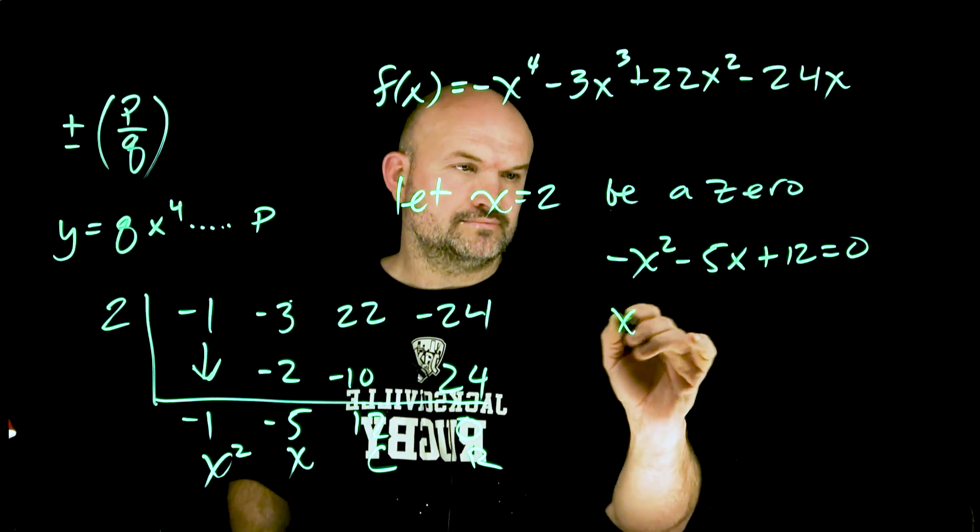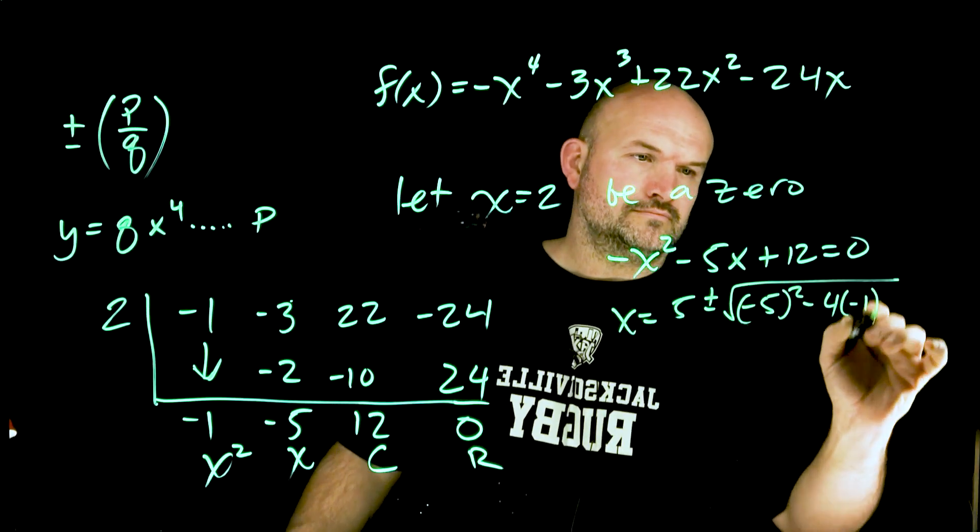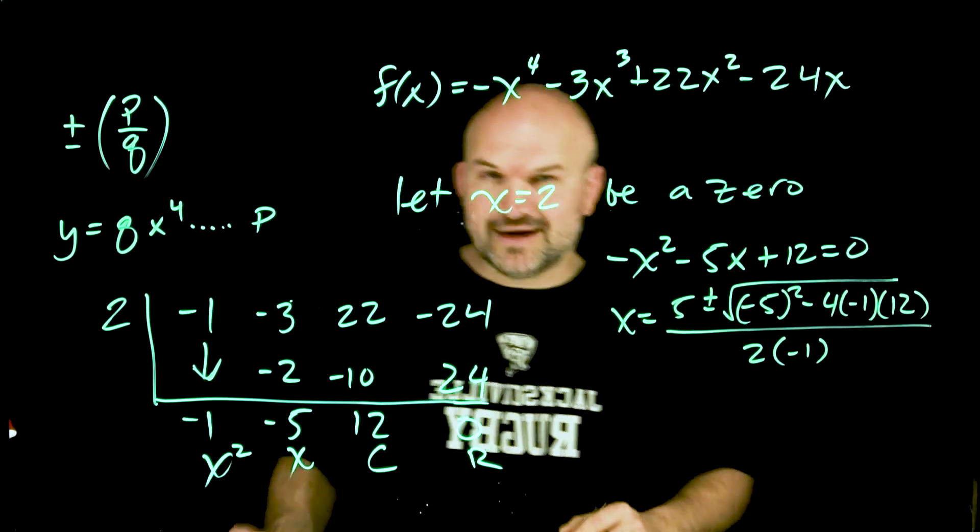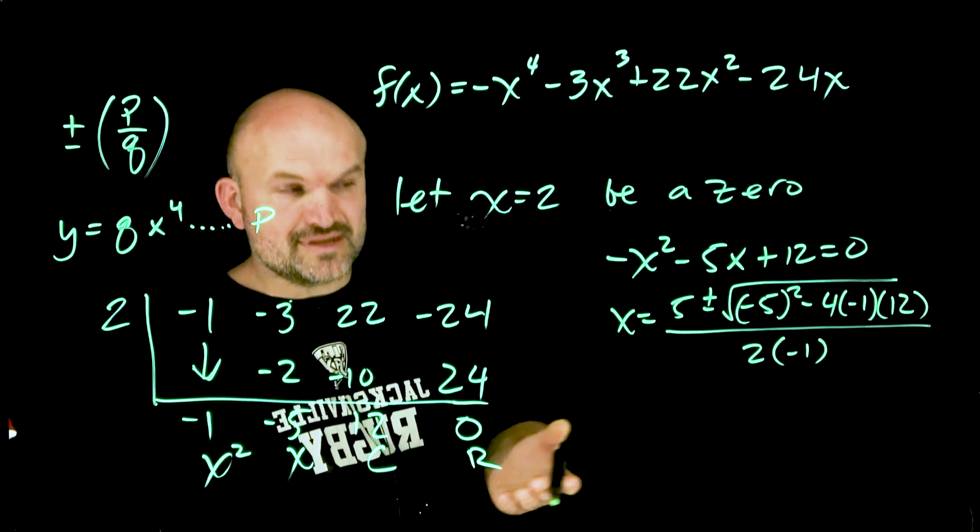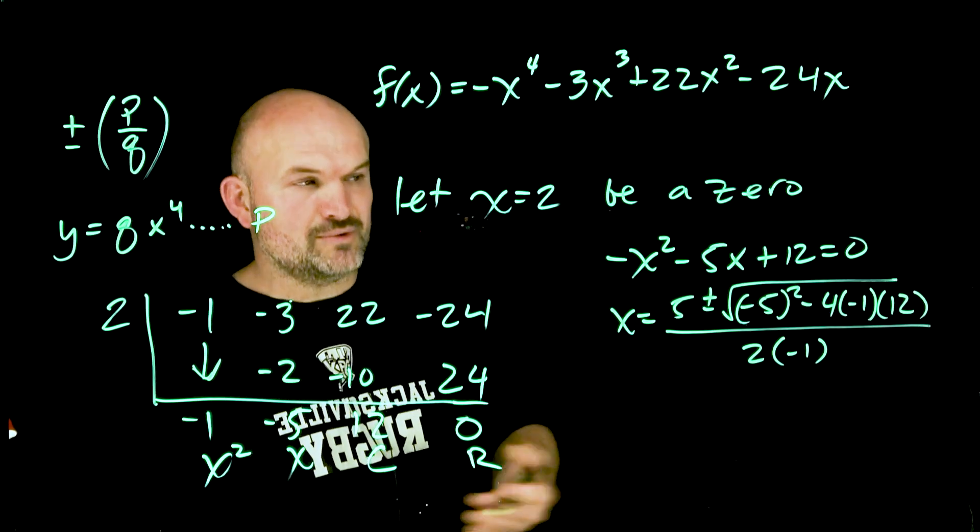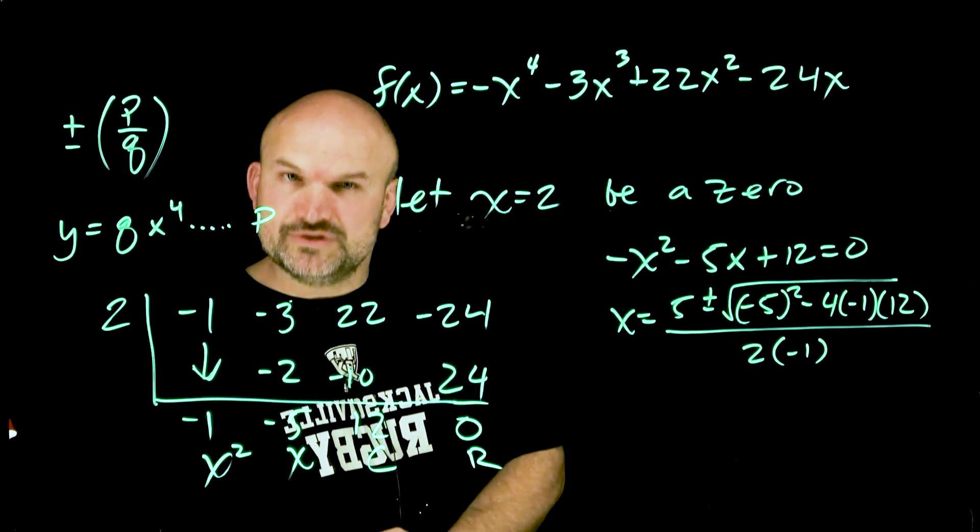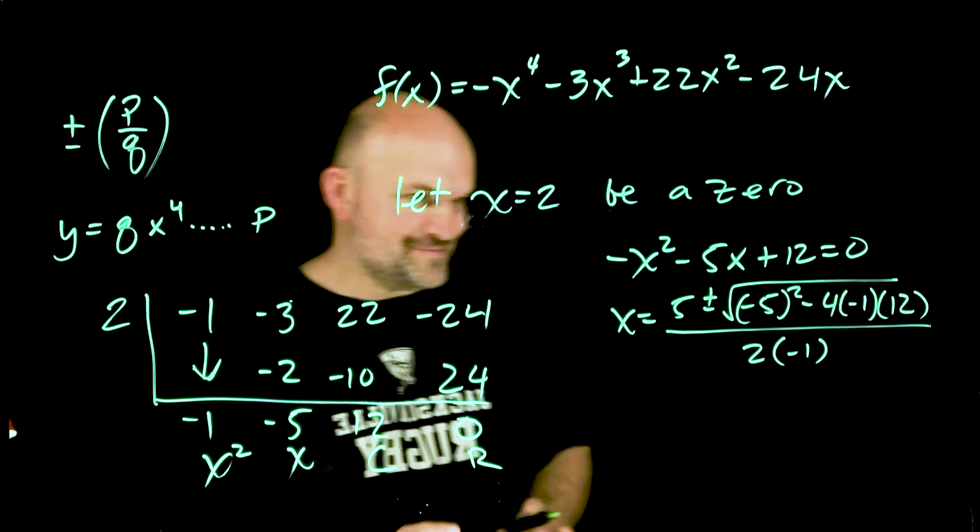Now please, hopefully you remember: opposite of b plus or minus square root of b squared minus 4 times a times c all over 2 times a. I know you didn't forget that, you got this.